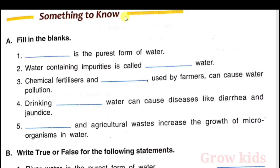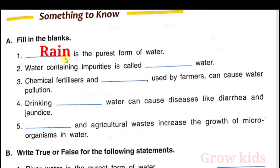Something to know. Section A: Fill in the blanks. Question 1: Rainwater is the purest form of water.